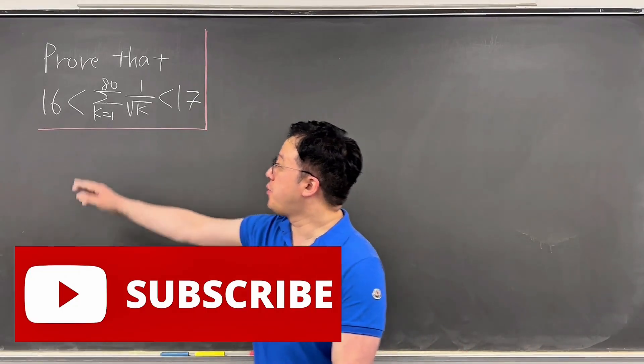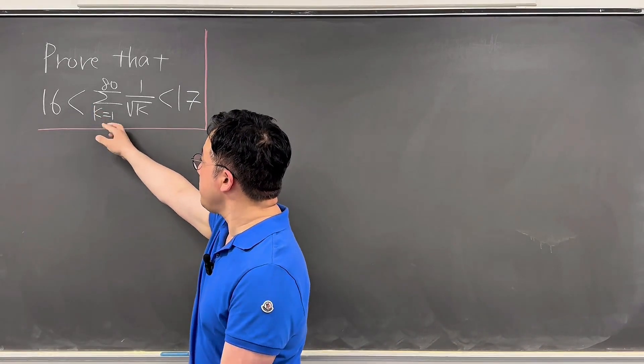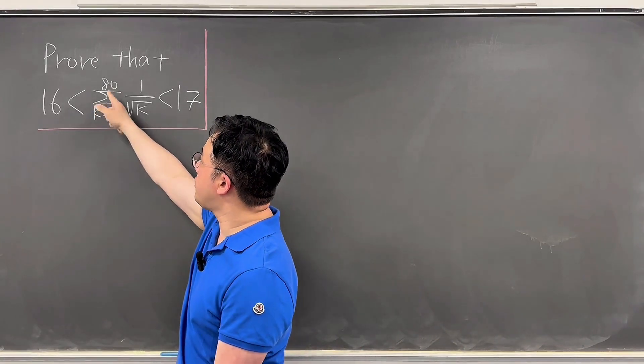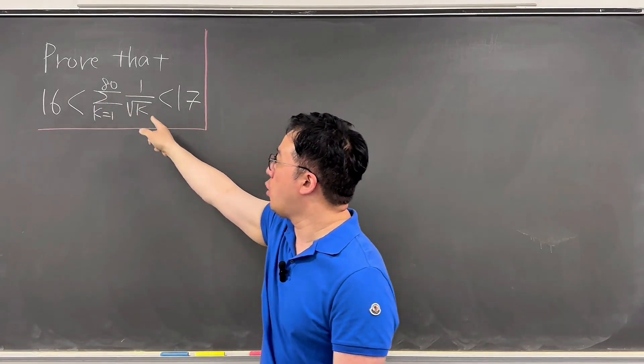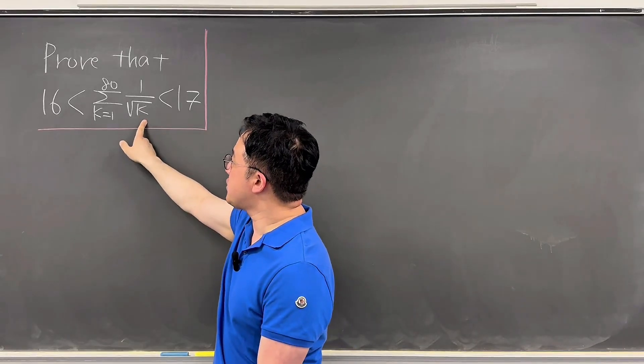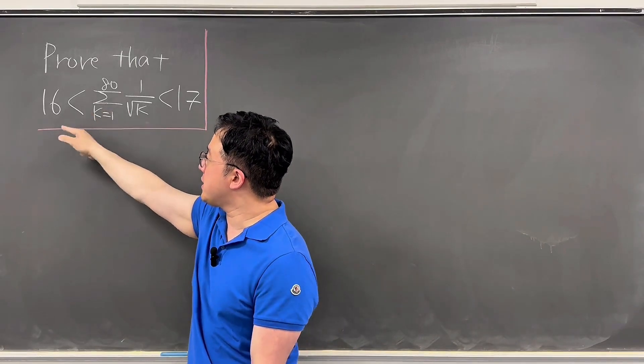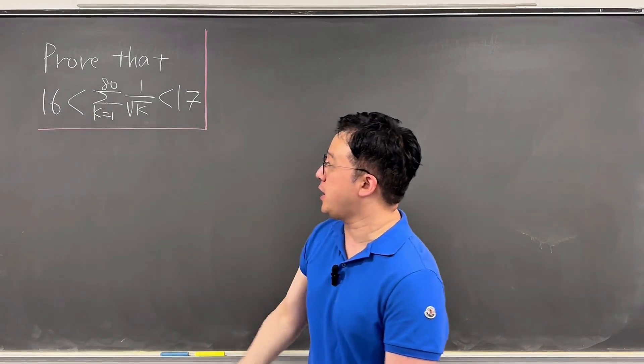The question is: prove that the summation from k equals 1 to 80 of 1 over square root of k is strictly between 16 and 17.